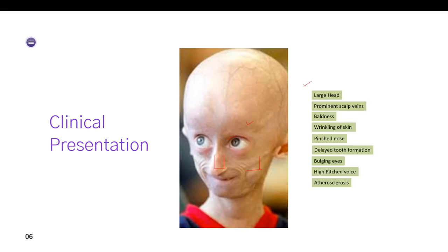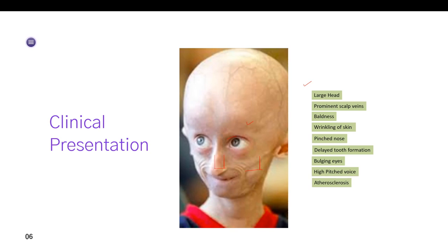So all these are features of HGPS child. Now let us discuss the genetic basis of HGPS. HGPS is considered to be a laminopathy. That means it has a defect in a structure known as nuclear lamina. So what is nuclear lamina and what it is made up of? Let's look into it in the next slide.